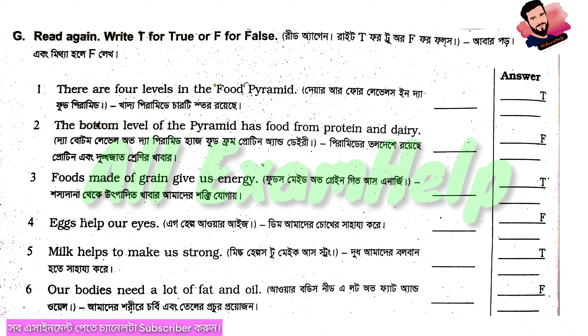Let's read: there are four levels in the food pyramid. The food pyramid has four levels. You can give T to the first statement — the answer is T for the first one.